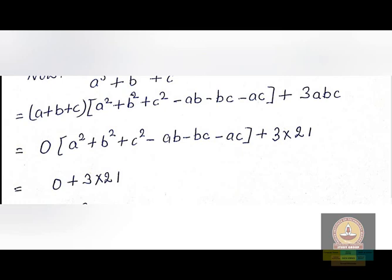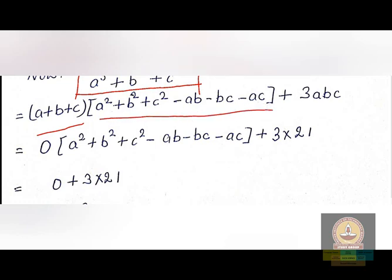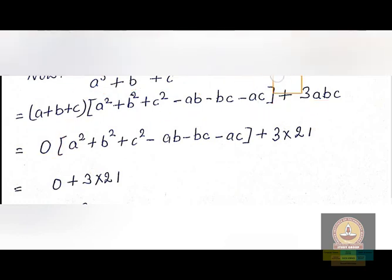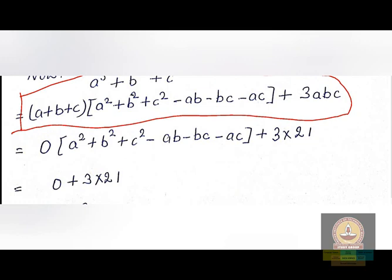Now we need to find a³ + b³ + c³. The formula is: a³ + b³ + c³ = (a + b + c)(a² + b² + c² − ab − bc − ac) + 3abc. This form is easy to work with because one of the factors is directly known.